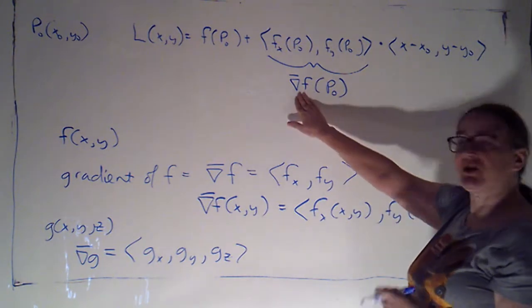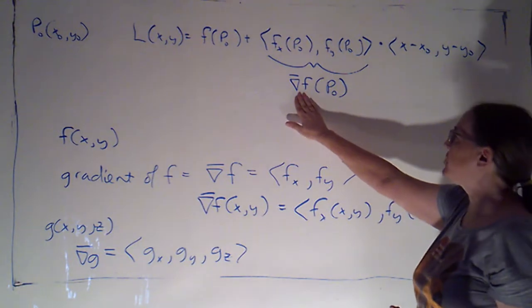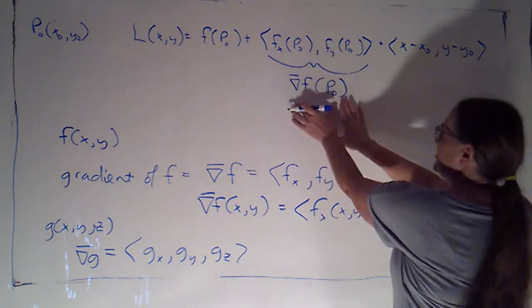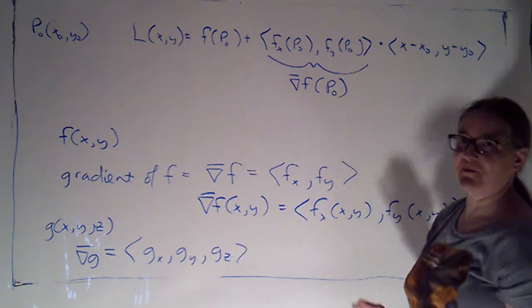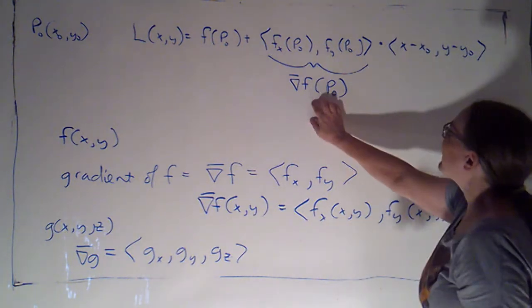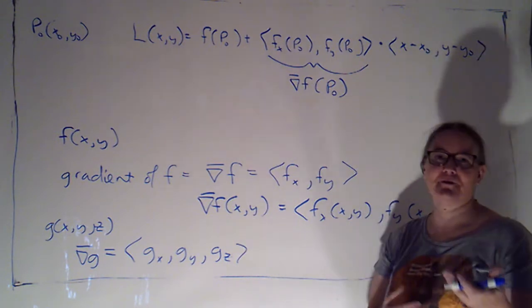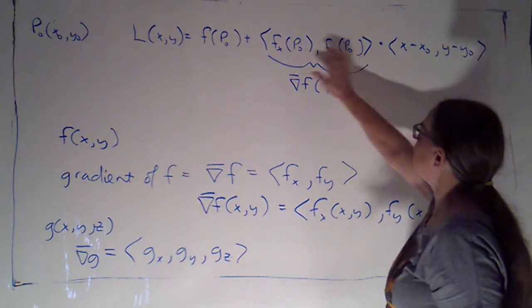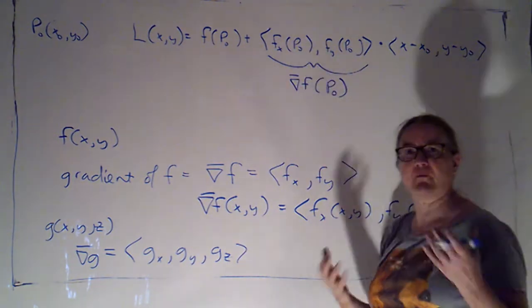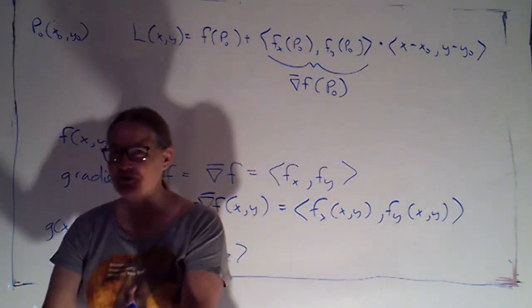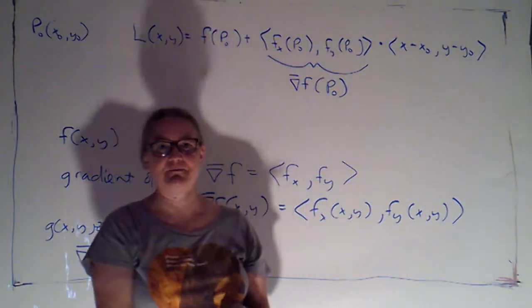Now, what's nice about having just one name for that vector function is, if I just call it the gradient at the point, which I hope will be the point of tangency, then I can use that name whether it's a function of two variables or three variables. If I'm writing the individual components, I obviously need to write it differently if I have two components than if I have three components.